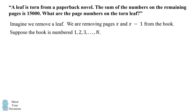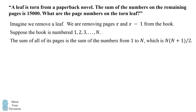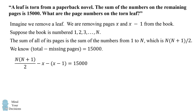Suppose the book is numbered from 1 to n. The sum of all the pages in the book is the sum of the numbers from 1 to n. This is the well-known formula: n times (n plus 1), all divided by 2. We know that the total sum of all the numbers minus the missing pages is equal to 15,000. So we can set up an equation: n(n+1)/2 minus x minus the quantity (x minus 1) equals 15,000.